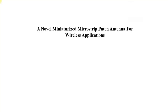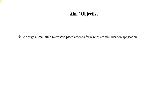The project name is the miniaturized microstrip patch antenna for wireless applications, such as wireless internet, Bluetooth, or Wi-Fi kind of applications. The aim of the project is to design a small size microstrip patch antenna for wireless communication applications. The objective is to design a smaller size, since frequency and antenna size are inversely proportional, so the aim is to design a compact microstrip patch that can be embedded in any wireless devices.